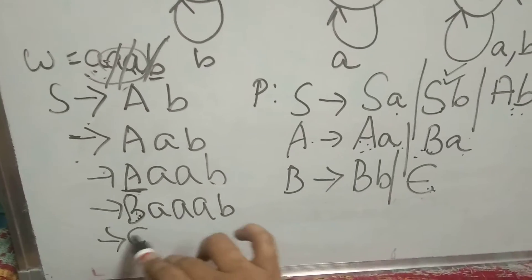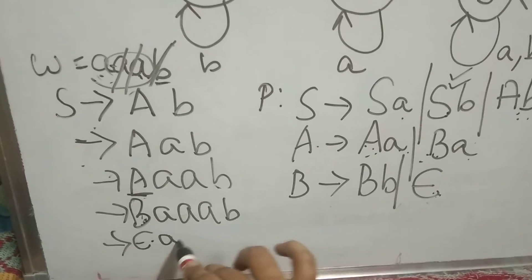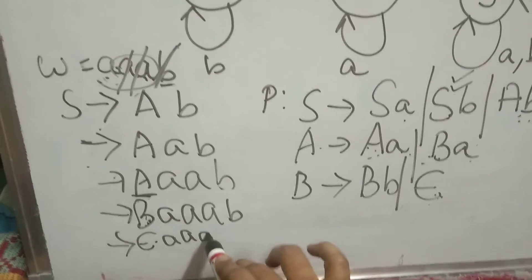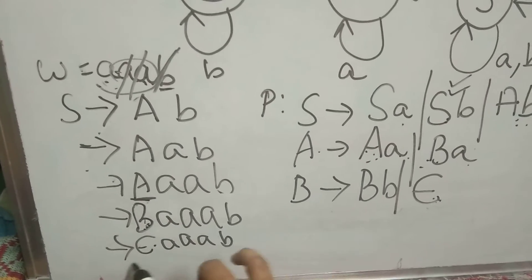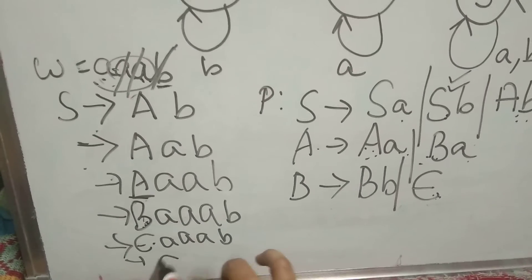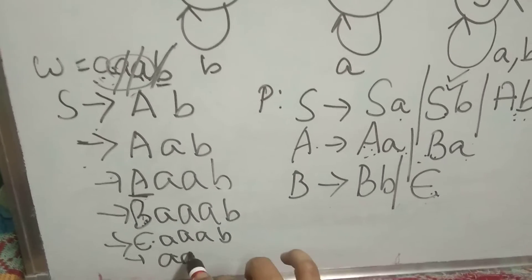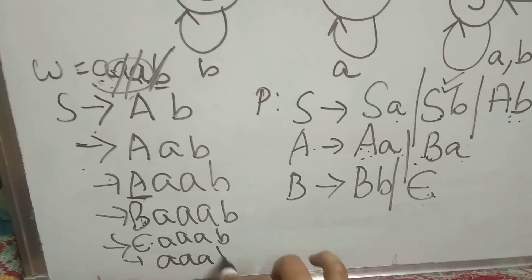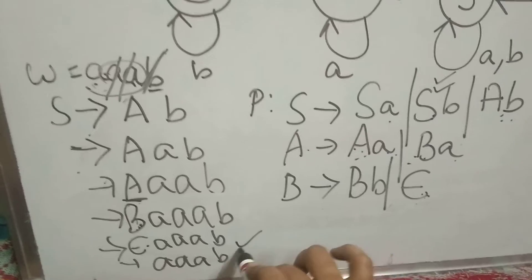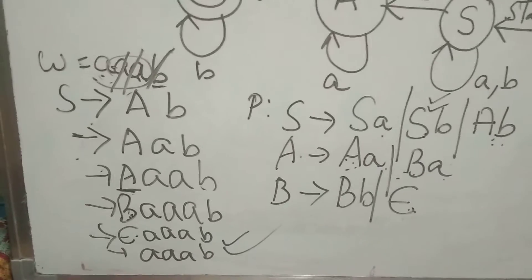First consider 'a'. So epsilon into AAB, which gives AAB, which is acceptable.